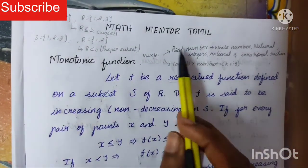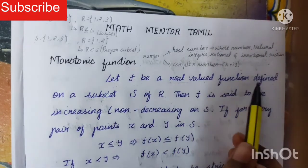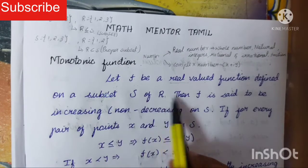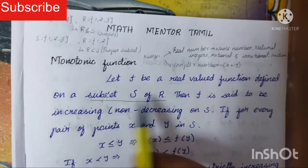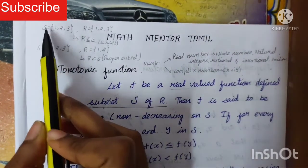Now you have an idea about real numbers. Let's see: Let f be a real valued function defined on a subset S of R. First of all, we need to know what is meant by subset. Let's see some examples.